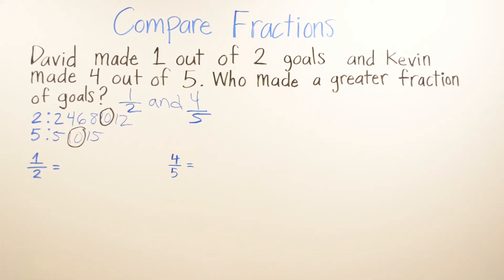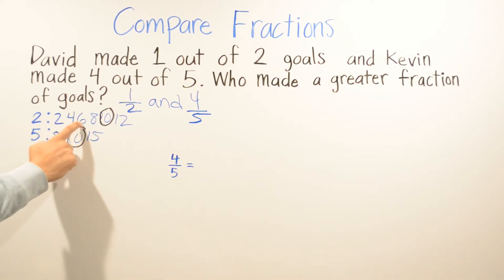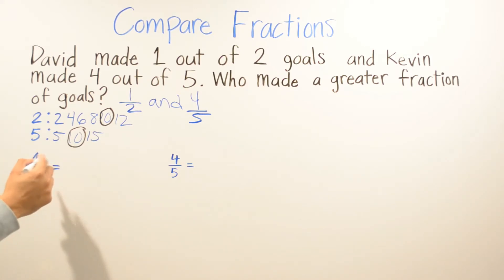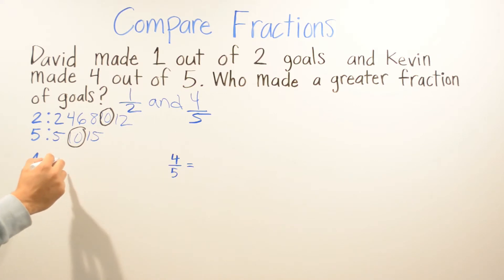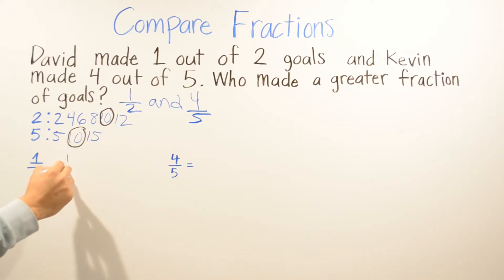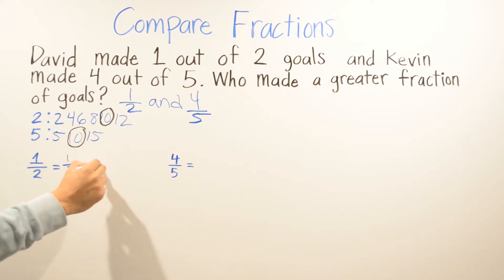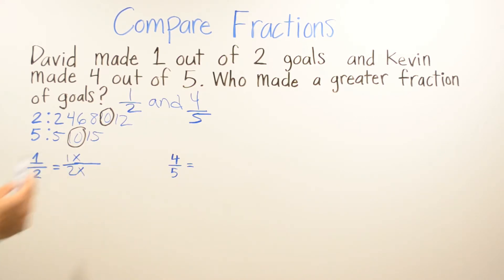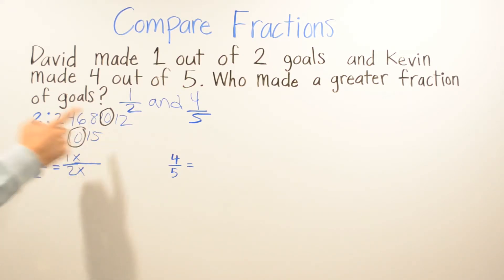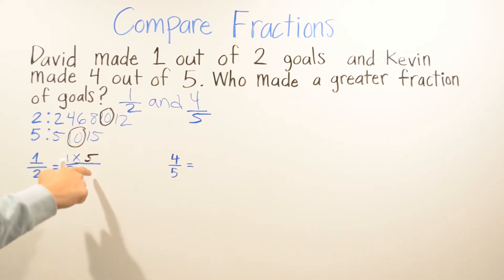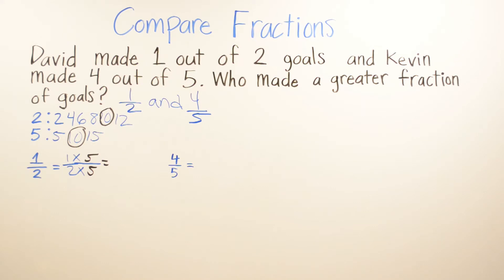To get from two to ten, I multiply by five — one, two, three, four, five. So I'm going to multiply one half by five over five. Whatever I multiply on the bottom I also have to multiply on the top. That gives me five times one equals five on top.